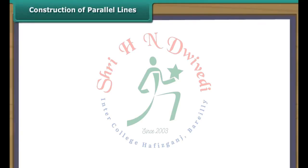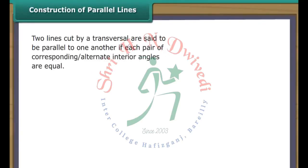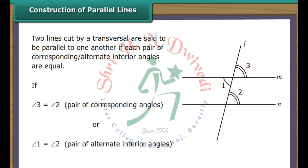Construction of Parallel Lines. Two lines cut by a transversal are said to be parallel to one another if each pair of corresponding alternate interior angles are equal. In the figure, if angle 3 is equal to angle 2, or angle 1 is equal to angle 2, line M is said to be parallel to N.